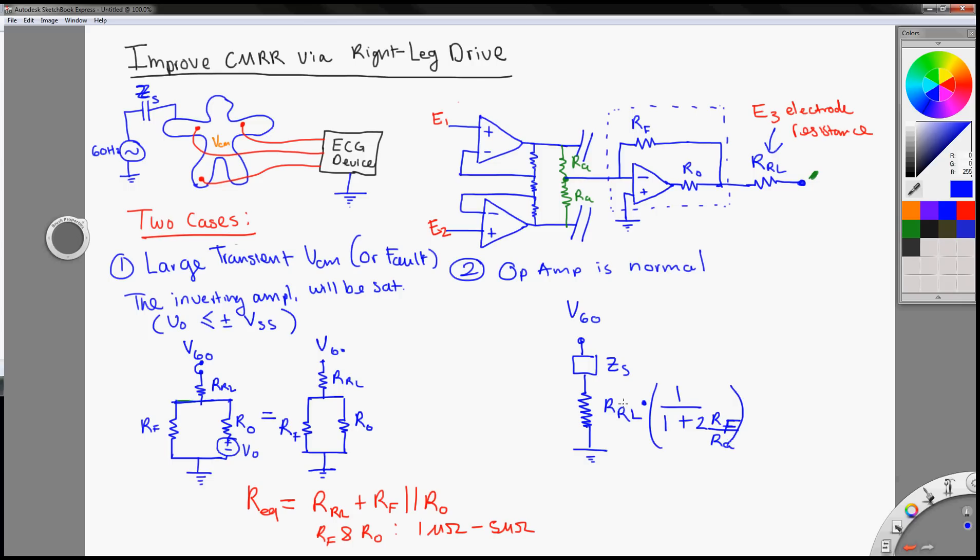Okay. You notice that there's still the right leg, the electrical resistance here. But this time, it is attenuated by this much factor, this, this factor right here. And this is all due to the driven, the driven, the driven right leg drive. So, it actually drives down the effective right, right leg resistance of the electro, the, the right leg electrode.